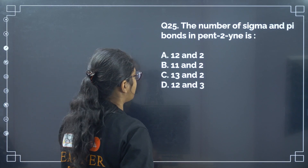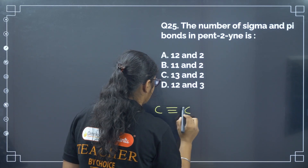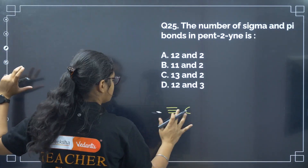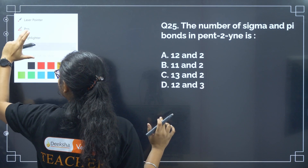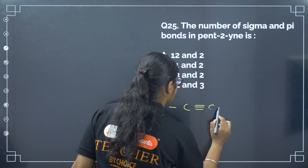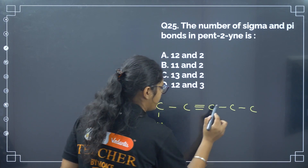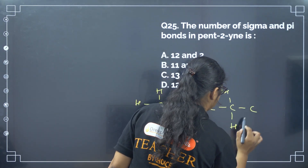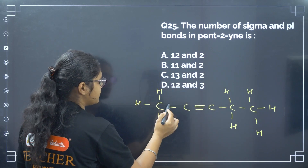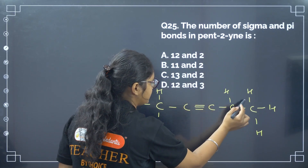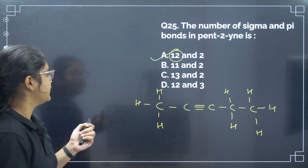Next: the number of sigma bonds and pi bonds in pent-2-yne. Drawing the structure: CH3-C≡C-CH2-CH3 with carbons 1 through 5. Counting all bonds including C-H bonds: 12 sigma bonds and 2 pi bonds. Correct answer is option number A.